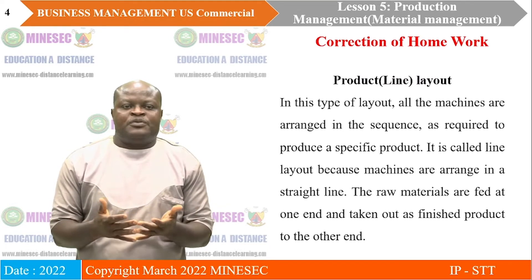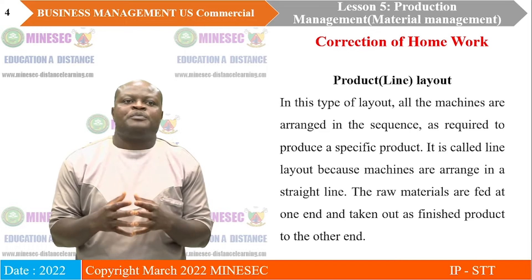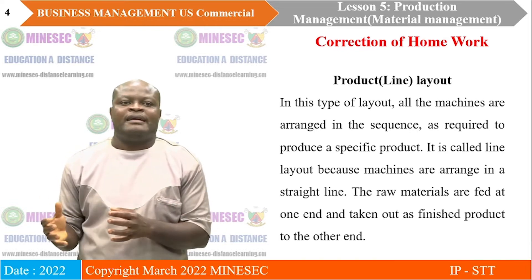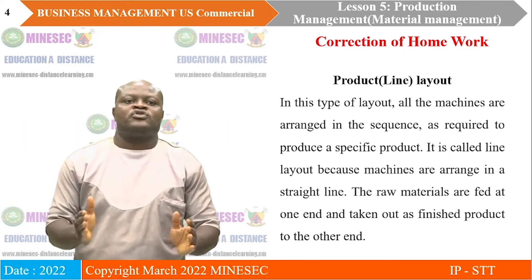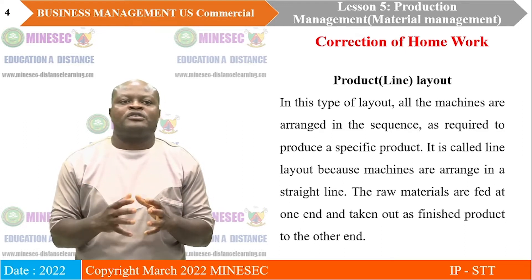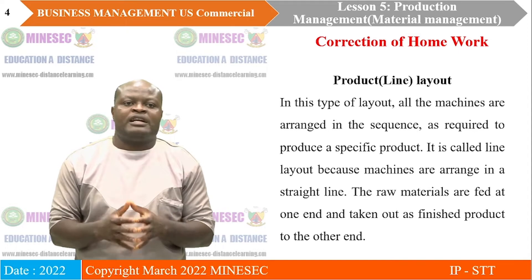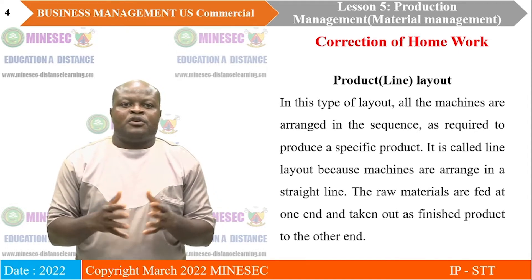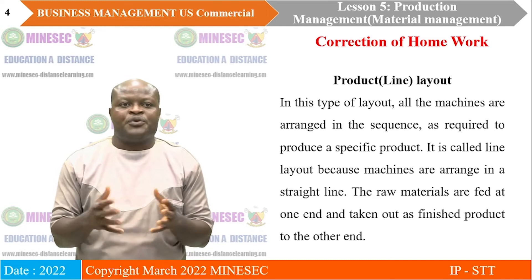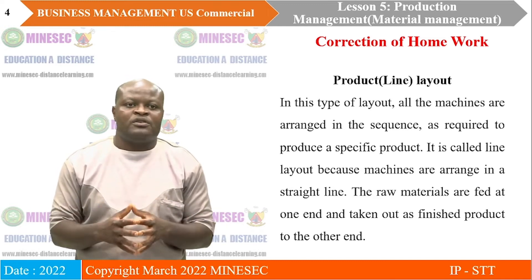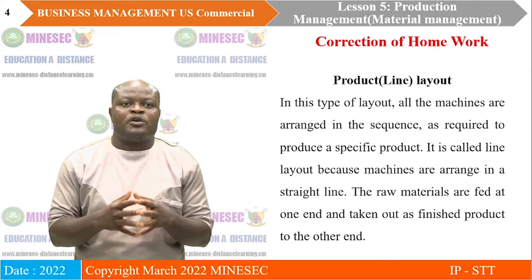There are two main types of layouts. We have the product or line layout. The product or line layout is a type of layout in which machines are arranged in a sequence in a straight line as required to produce a specific product. The raw materials are fed at one end and the finished product comes out at the other end. This is generally associated with a brewery industry, where they produce only a specific product like beer or juice, so they use a product or line layout.